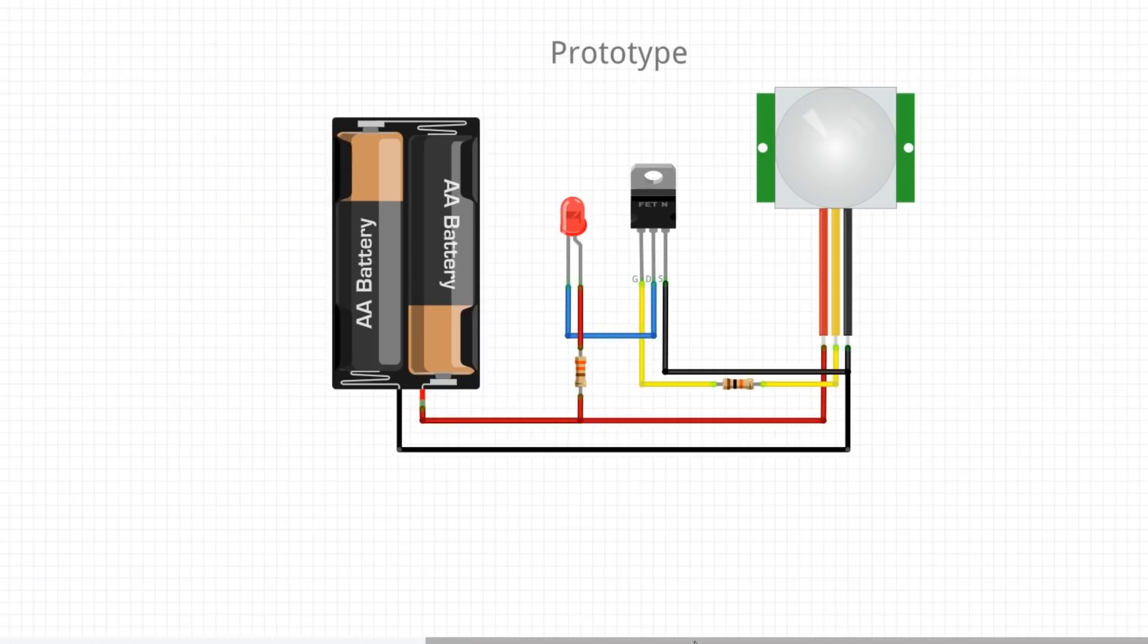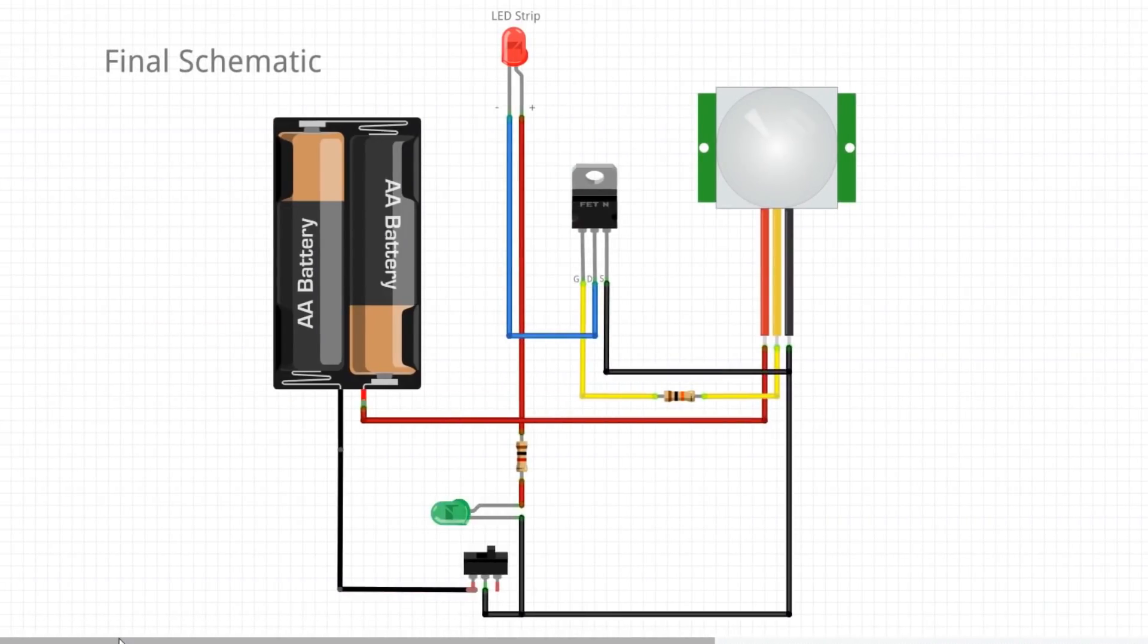Basically we have the same thing except we have a status LED circuit. I added in a toggle switch that turns the entire circuit on and off. When the circuit is turned on, this status LED turns on regardless of motion being sensed or not.